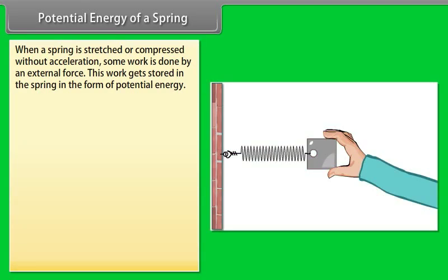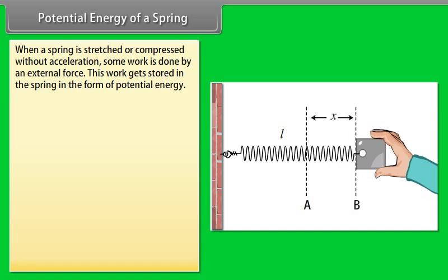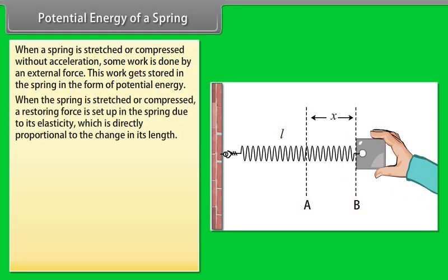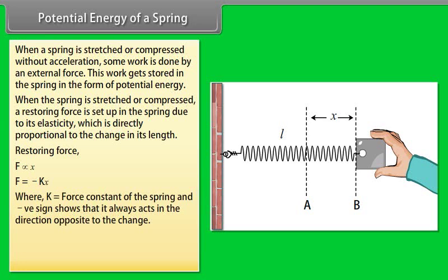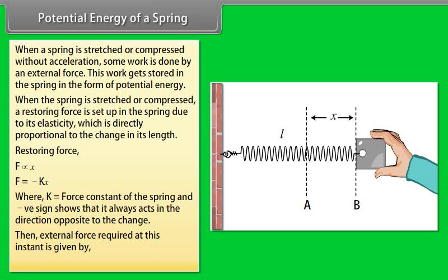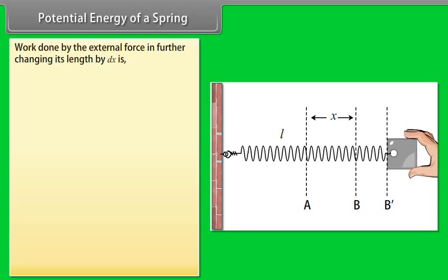Potential energy of a spring. When a spring is stretched or compressed without acceleration, some work is done by an external force. This work gets stored in the spring in the form of potential energy. When the spring is stretched or compressed, a restoring force is set up in the spring due to its elasticity, which is directly proportional to the change in its length. Restoring force is given by F ∝ x, F = -kx, where k = force constant of the spring. And negative sign shows that it always acts in the direction opposite to the change. Then external force required at this instant is given by F = kx. Work done by the external force in further changing its length by dx is given.